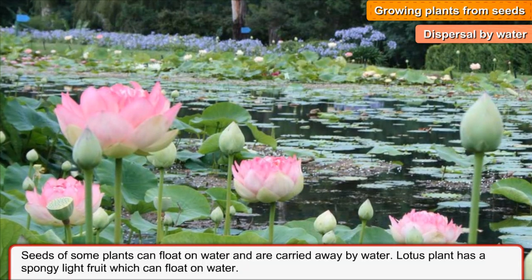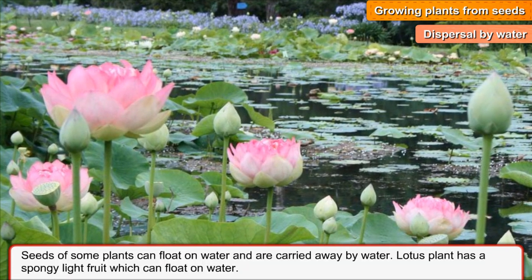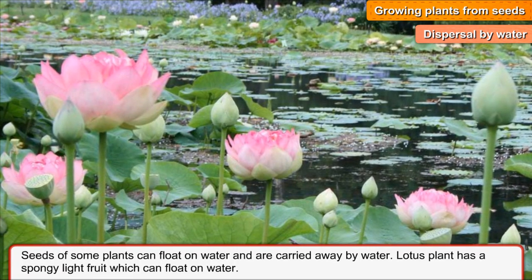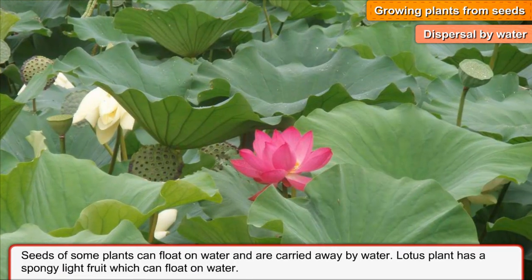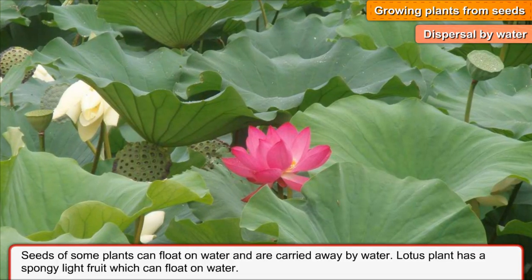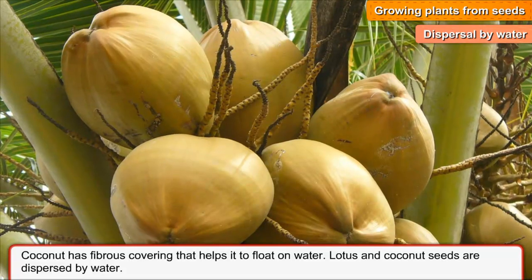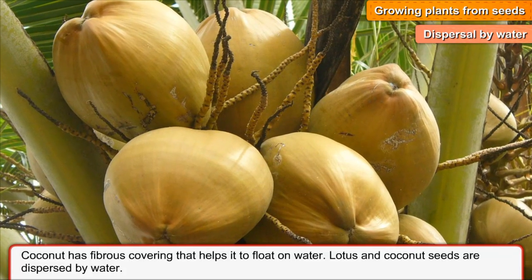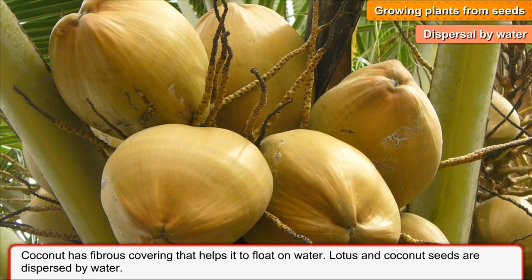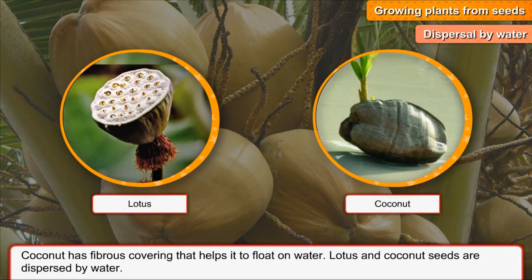Dispersal by water. Seeds of some plants can float on water and are carried away by water. Lotus plant has a spongy light fruit which can float on water. Coconut has a fibrous covering that helps it to float on water. Lotus and coconut seeds are dispersed by water.